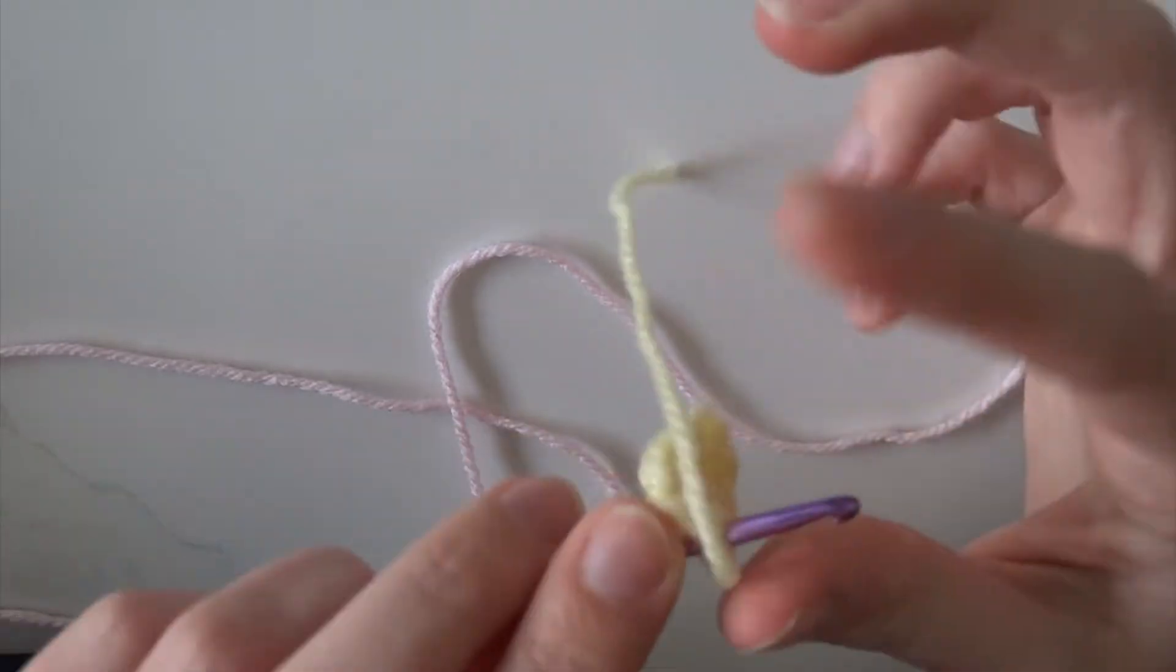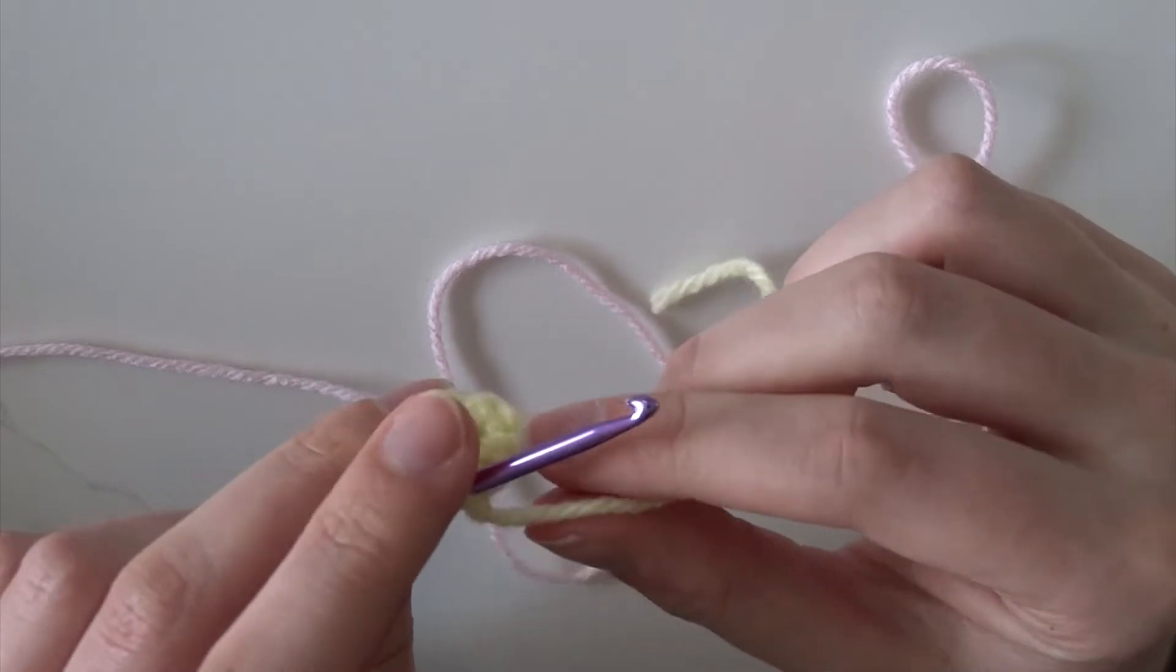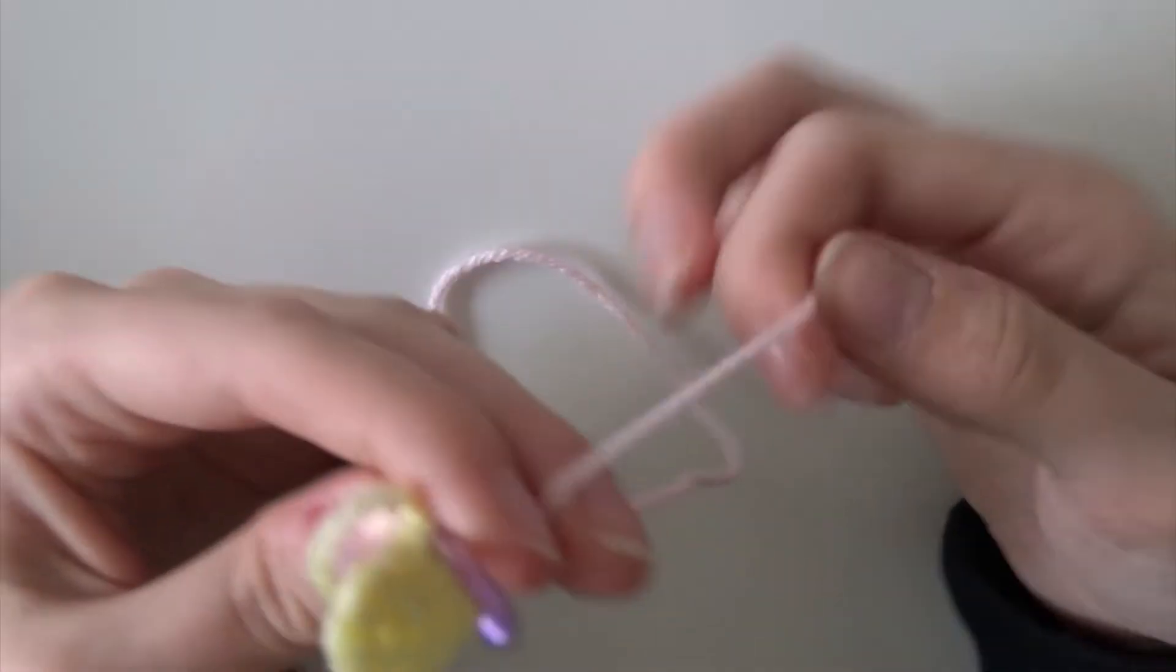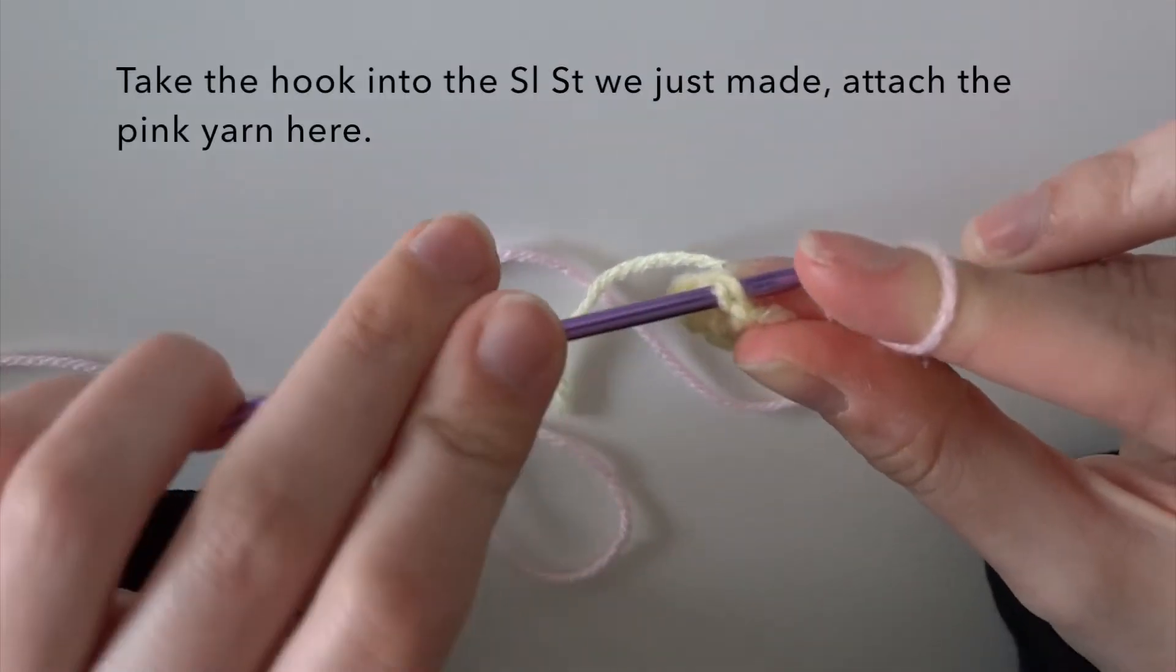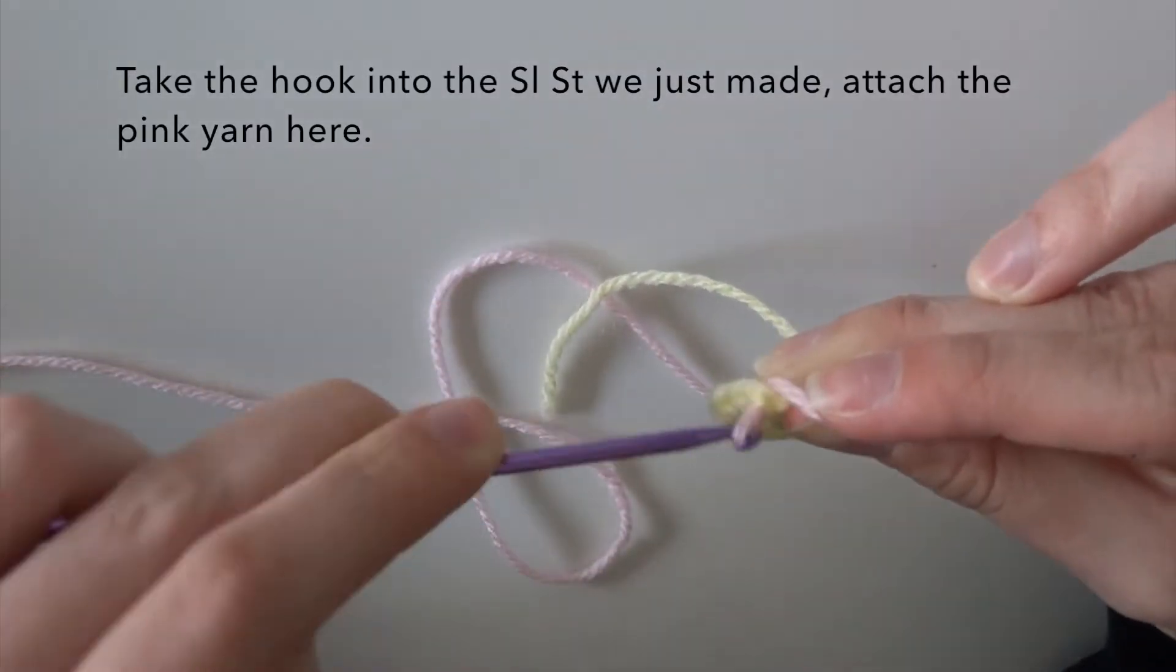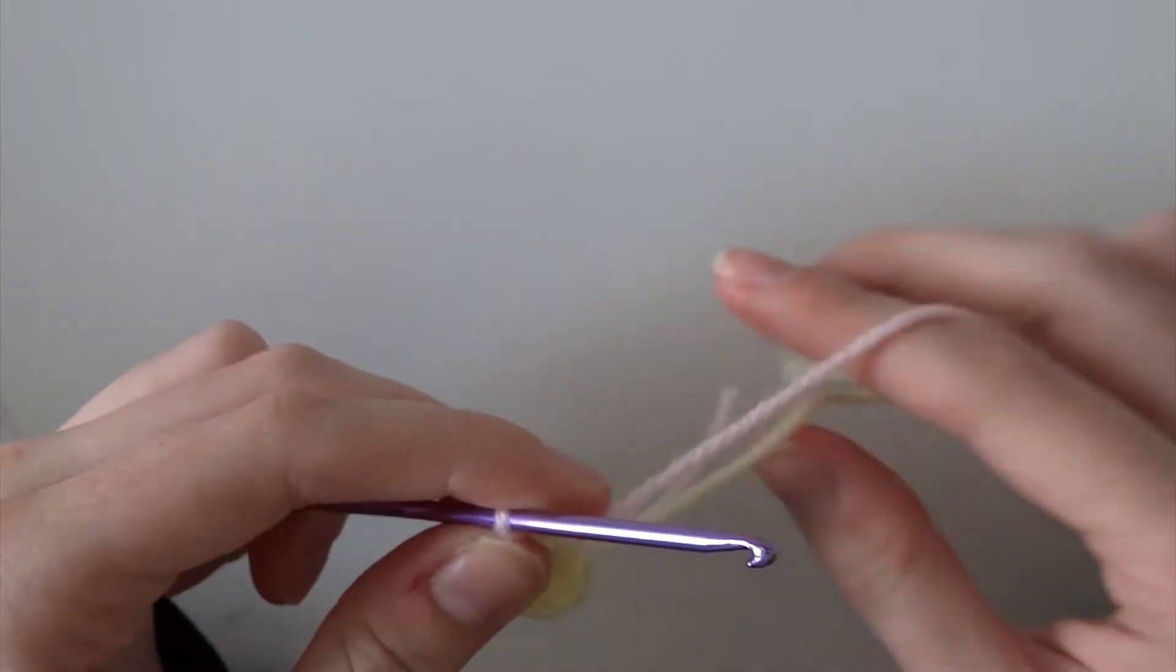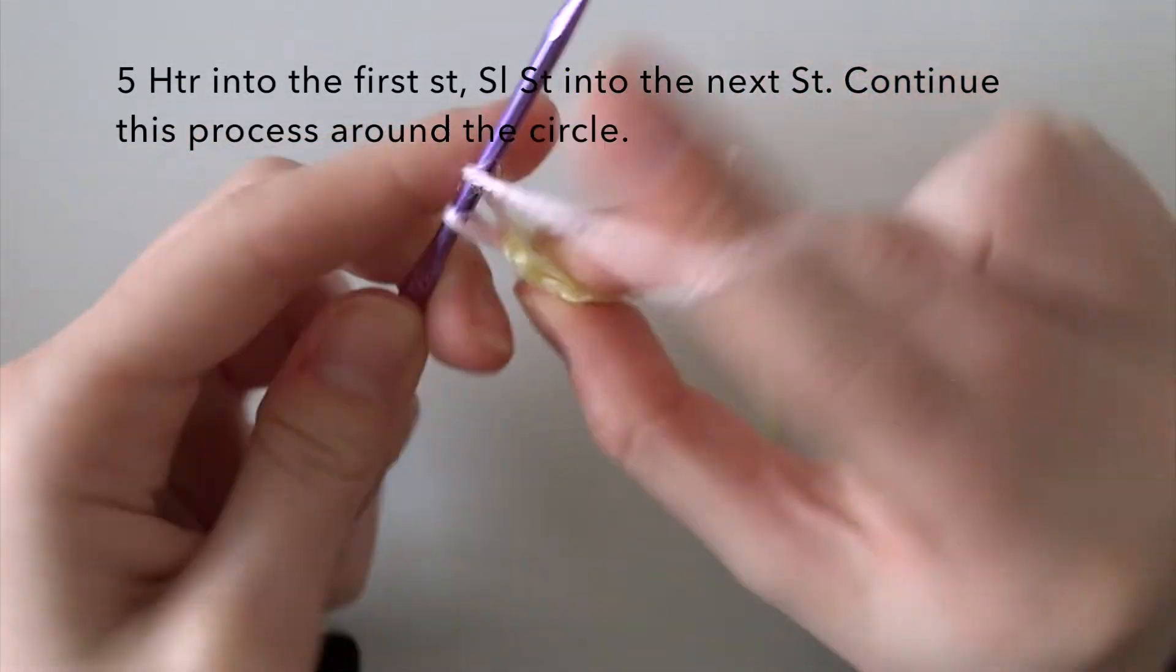After you fastened off the yellow yarn, you want to insert the hook back into the slip stitch and then attach the pink yarn into the slip stitch.